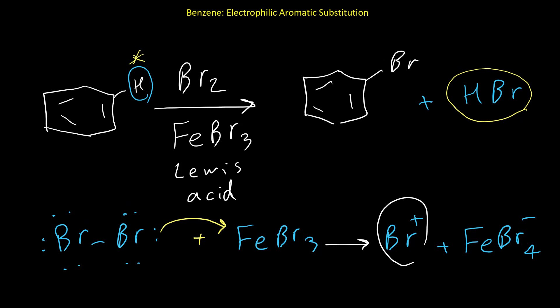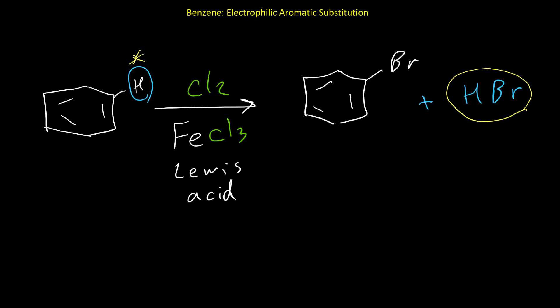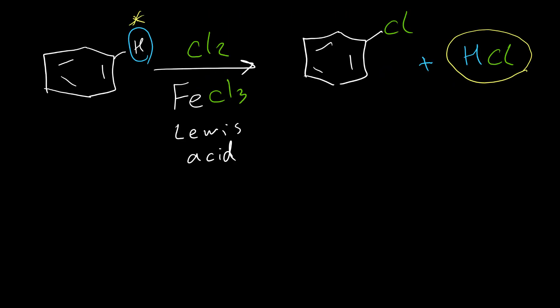For chlorination, the reaction is the same. We use Cl2 and FeCl3 instead of Br2 and FeBr3, and everything proceeds identically, giving a product with chlorine in place of hydrogen.